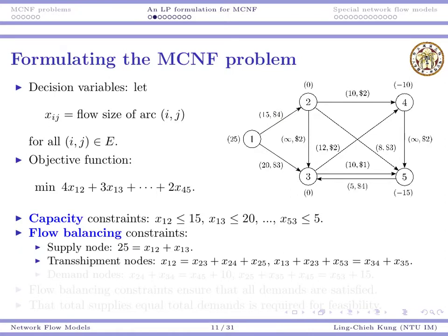For transshipment nodes, it's the same thing. For example, for node 2, the only flow in is through arc (1,2). And there are three flow outs. So that's why x12 must be equal to x23 plus x24 plus x25. Okay? (2,3), (2,4), and (2,5).